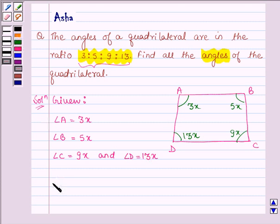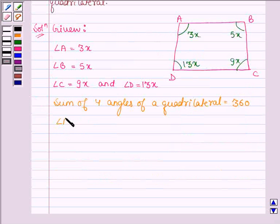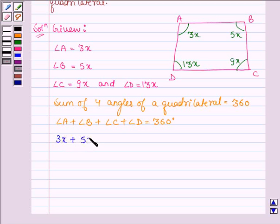Now as we know, the sum of four angles of a quadrilateral is equal to 360 degrees. This implies angle A plus angle B plus angle C plus angle D equals 360 degrees. That is, 3x plus 5x plus 9x plus 13x equals 360.